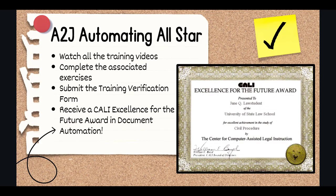Automating legal forms for pro se litigants, when it is done well, is a highly marketable skill. We want to honor the work that you will put into this training course and into your future A2J guided interviews by giving you a Cali award when you complete the course. The Cali Excellence for the Future award is given to the student in law school courses who scores the highest in those classes. It's an impressive group of the best of the best law students across the country, and we want to add you to that mix. Watch the videos, do the work, and send us the training verification form, and we'll send you a Cali award to digitally display on your resume and physically display in your office. More information on the verification process can be found on the course landing page.